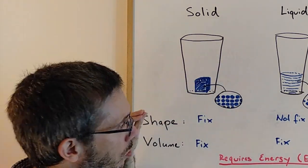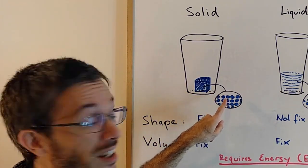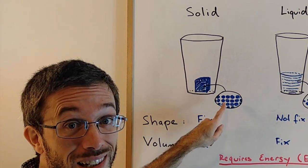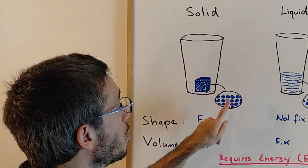If we would be able to zoom in a lot, we would see that the individual molecules of something that is solid are moving slightly, but overall they're stuck together. There's a lot of interaction between them, keeping them kind of in a grid.